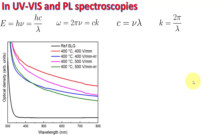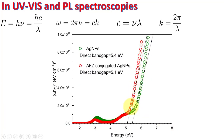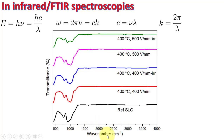In spectroscopy, we plot absorption or transmission against different variables. In UV spectroscopy, absorption is plotted against wavelength. In PL spectroscopy, emission intensity is plotted against wavelength. When calculating band gap from UV spectroscopy, the axis is energy. In FTIR, we plot wave number — and the question is why.